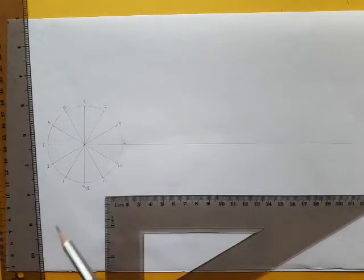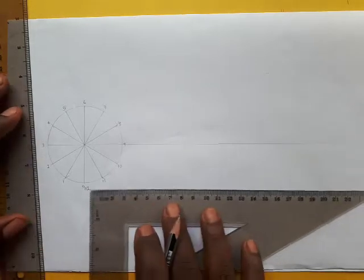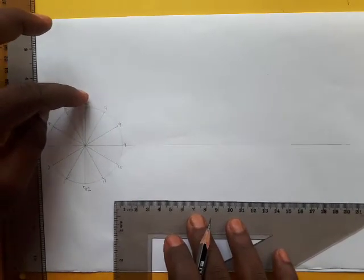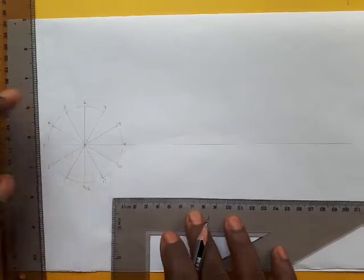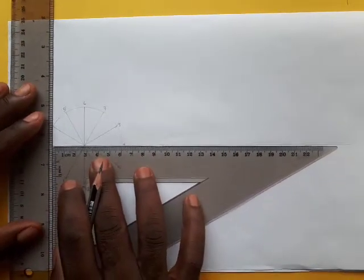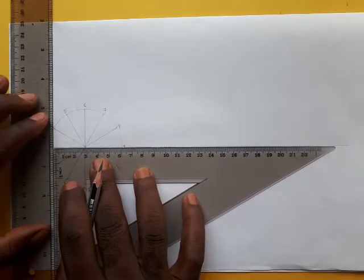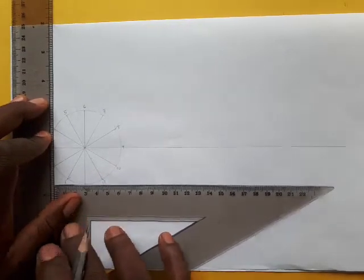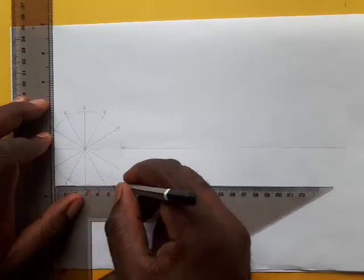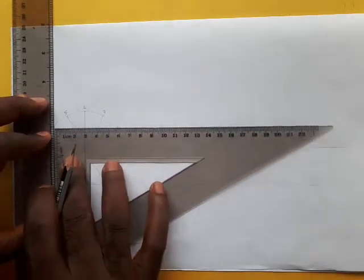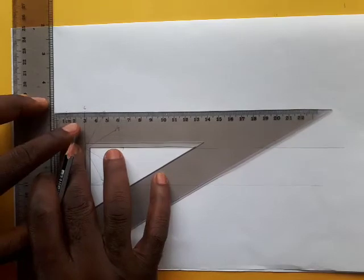Zero and 12 are on the same point. Now the next thing you do is drop a perpendicular line from on this line 6-0. Or better still, you can just transfer this horizontal line here. Make sure you transfer it correctly. Transfer it down here to this point and draw a horizontal thin line.